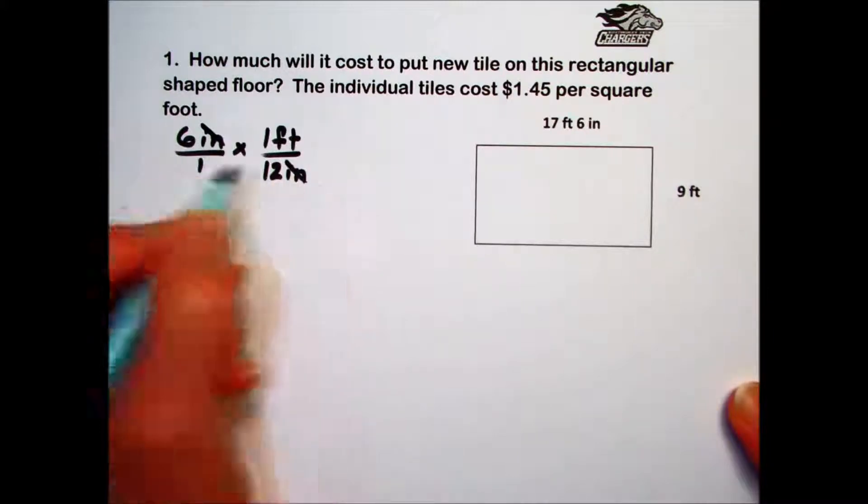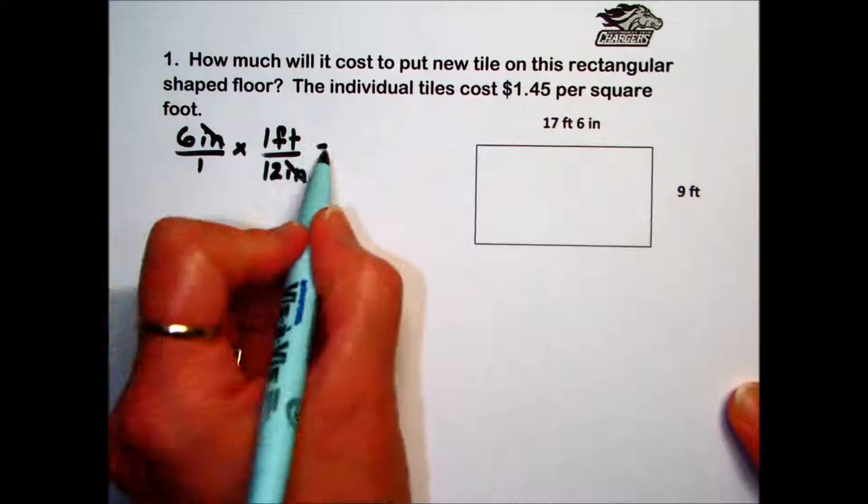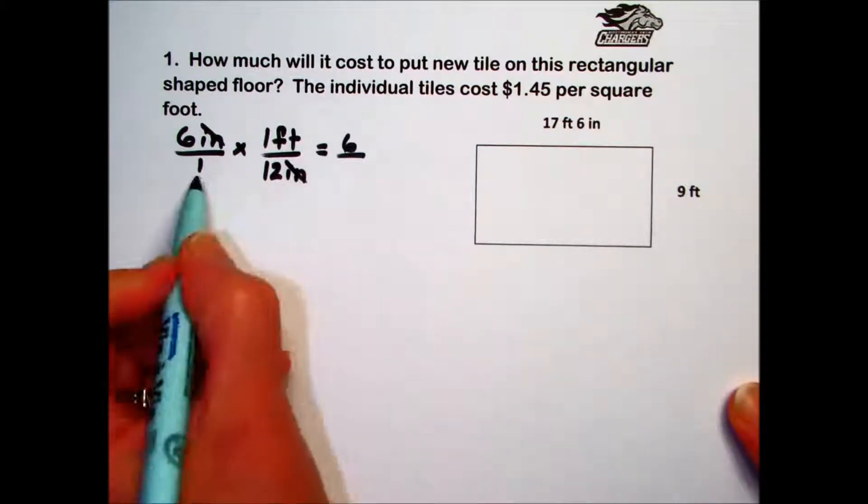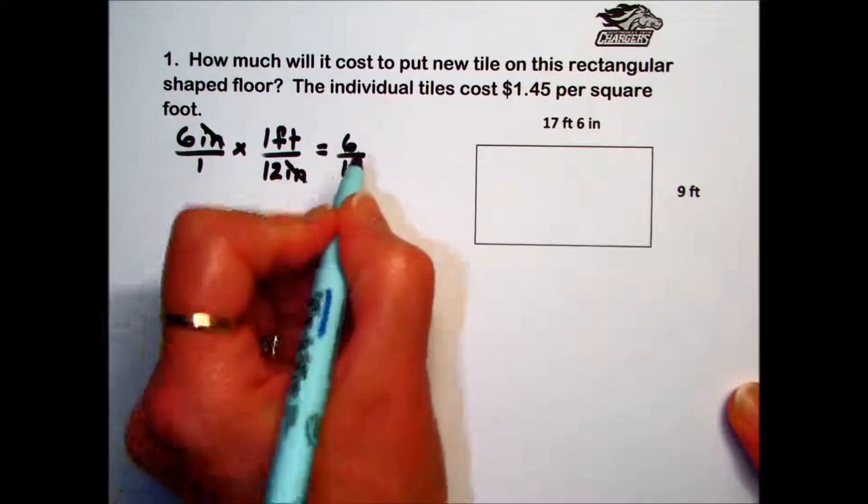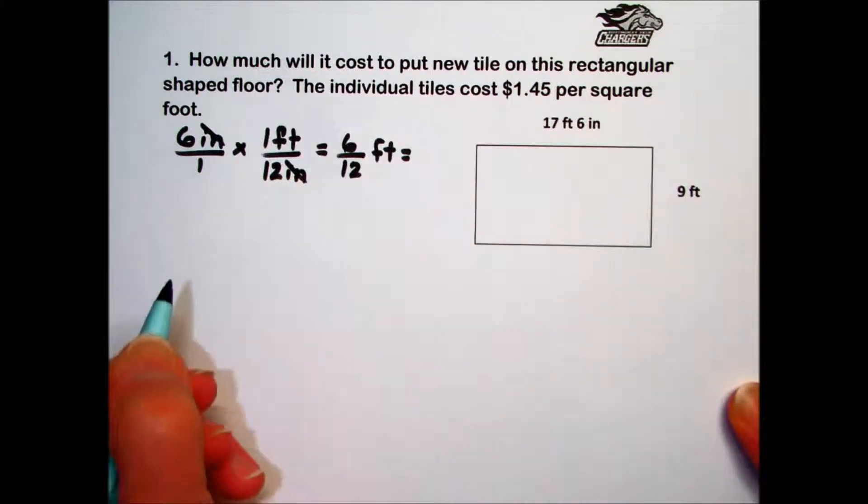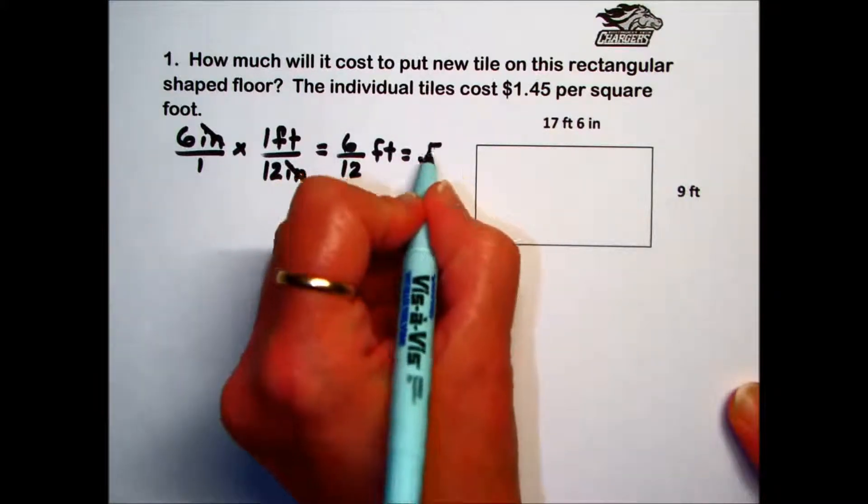Canceling out common values in the numerator and the denominator leaves us with feet. Multiplying the fractions, we have 6 times 1 in the numerator, 1 times 12 in the denominator. We have 6 twelfths foot. Converting that into a decimal, 6 divided by 12 gives us 0.5 feet.